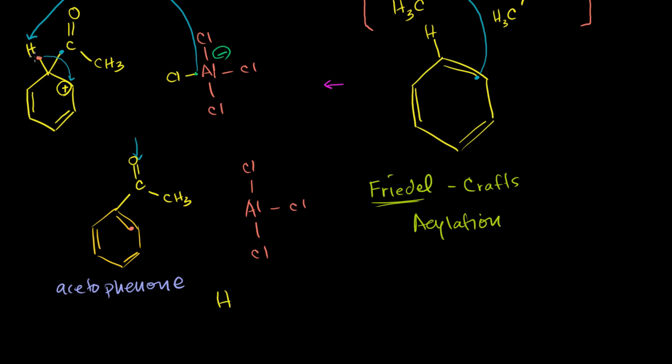So you have the hydrogen proton bonded—it took this electron from the aluminum and is bonded to the chlorine. I didn't want to forget that in the last step of Friedel-Crafts acylation. We also get some hydrogen chloride.